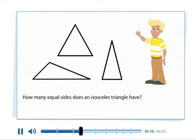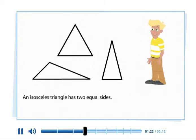How many equal sides does an isosceles triangle have? An isosceles triangle has two equal sides.